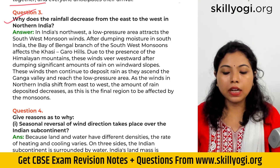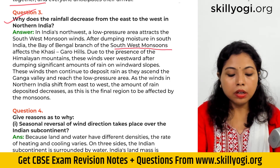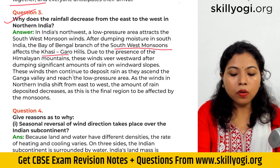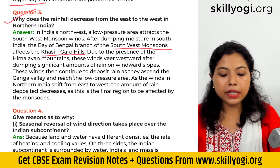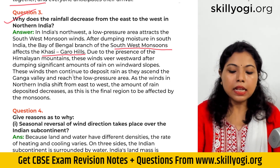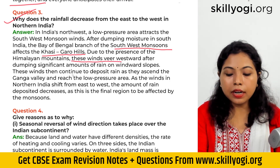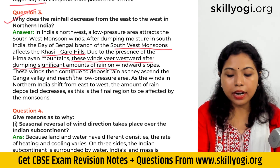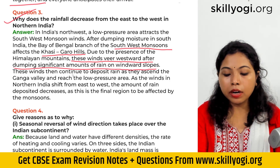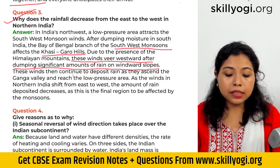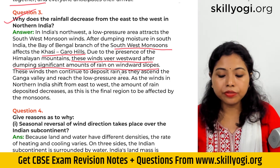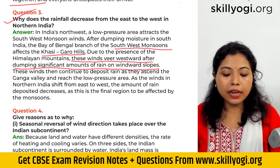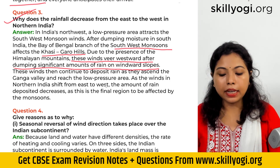the Bay of Bengal branch of the southwest monsoon affects the Khasi-Garo hills. Due to the presence of the Himalayan mountains, these winds veer westward after dumping significant amounts of rain on windward slopes. These winds then continue to deposit rain as they ascend the Ganga Valley and reach the low-pressure area.